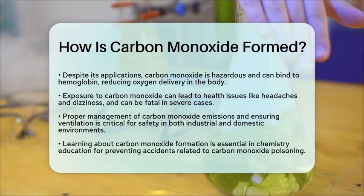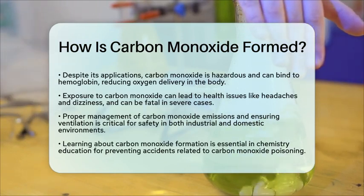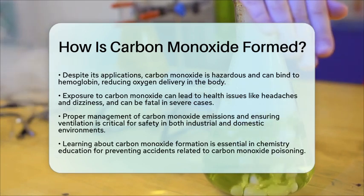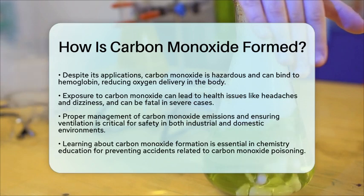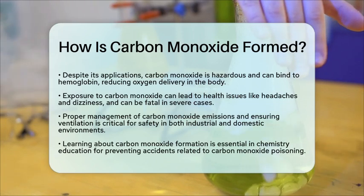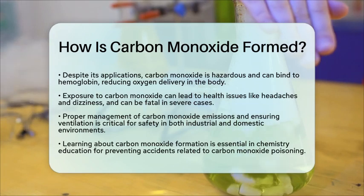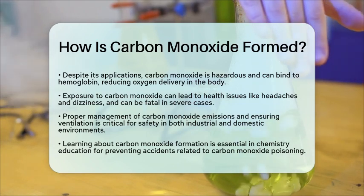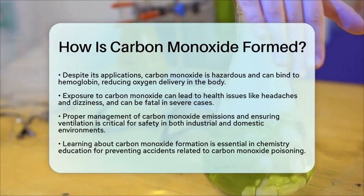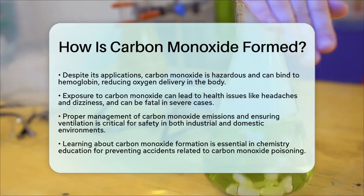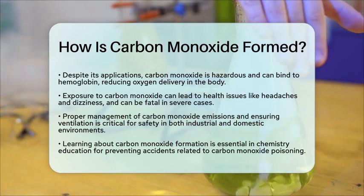Therefore, managing carbon monoxide emissions and ensuring proper ventilation in spaces where it may be produced is essential for safety. In chemistry education, learning about the formation of carbon monoxide emphasizes the importance of proper combustion conditions and ventilation. This knowledge is vital for maintaining safety in both industrial and domestic settings, helping to prevent accidents related to carbon monoxide poisoning.